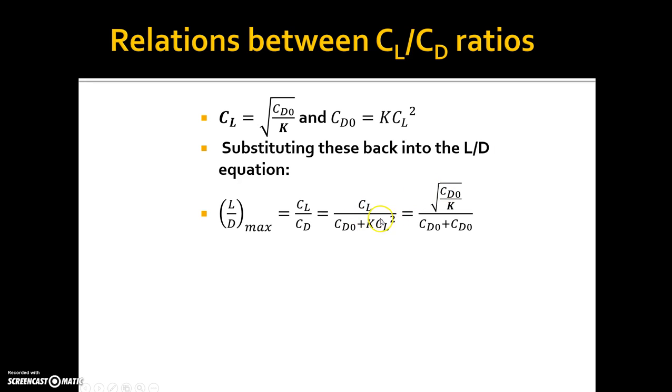That is there and the coefficient of lift squared, but if I square this I get CD0 over K. So CD0 over K, the 2Ks will cancel and I am just left with 2CD0.